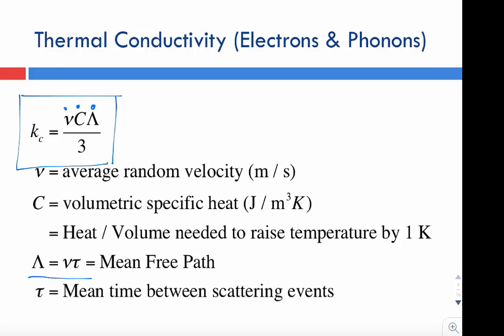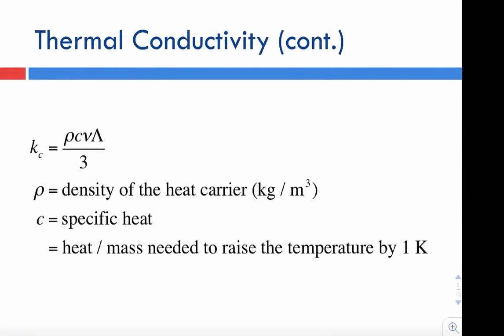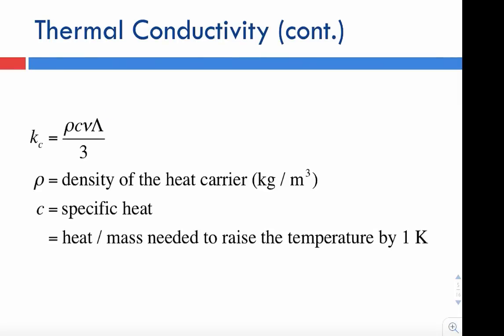The specific heat in this equation is the volumetric specific heat, which can also be written using specific heat per unit mass (per kilogram) times density rho in kilograms per meter cubed. So the full equation is: thermal conductivity equals density times specific heat times average velocity of carriers times mean-free path lambda.